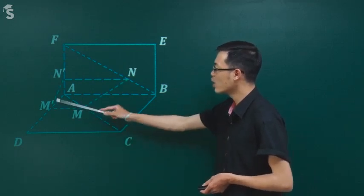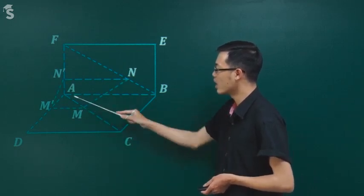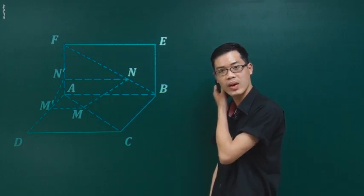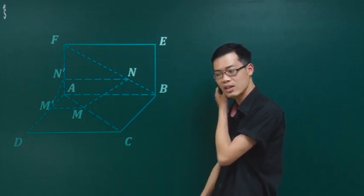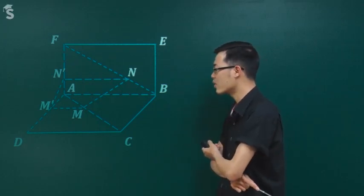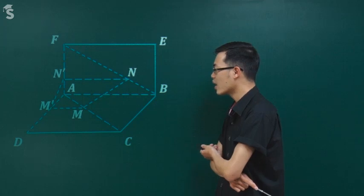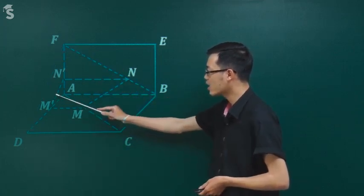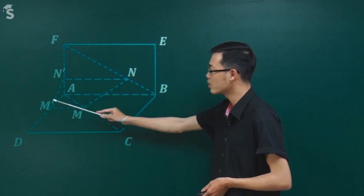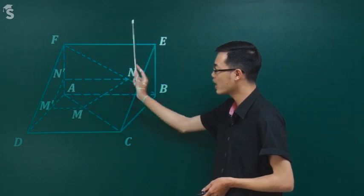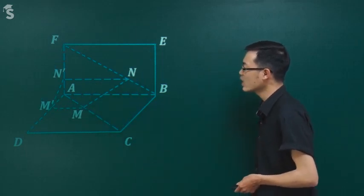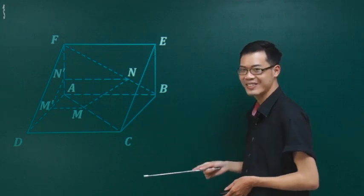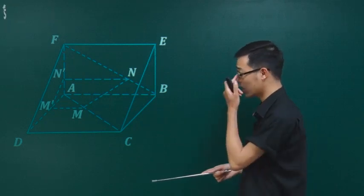Chúng ta nối thêm một số cạnh vào để thu được hình lăng trụ. Nối M, M', N, N' để thu được một số mặt phẳng. Nối hai cạnh này vào - tí nữa thằng nào cũng dùng. Hình trông giống một cái lăng trụ tam giác nhưng nằm ngang ra thôi. Đây chính là một bài về lăng trụ.